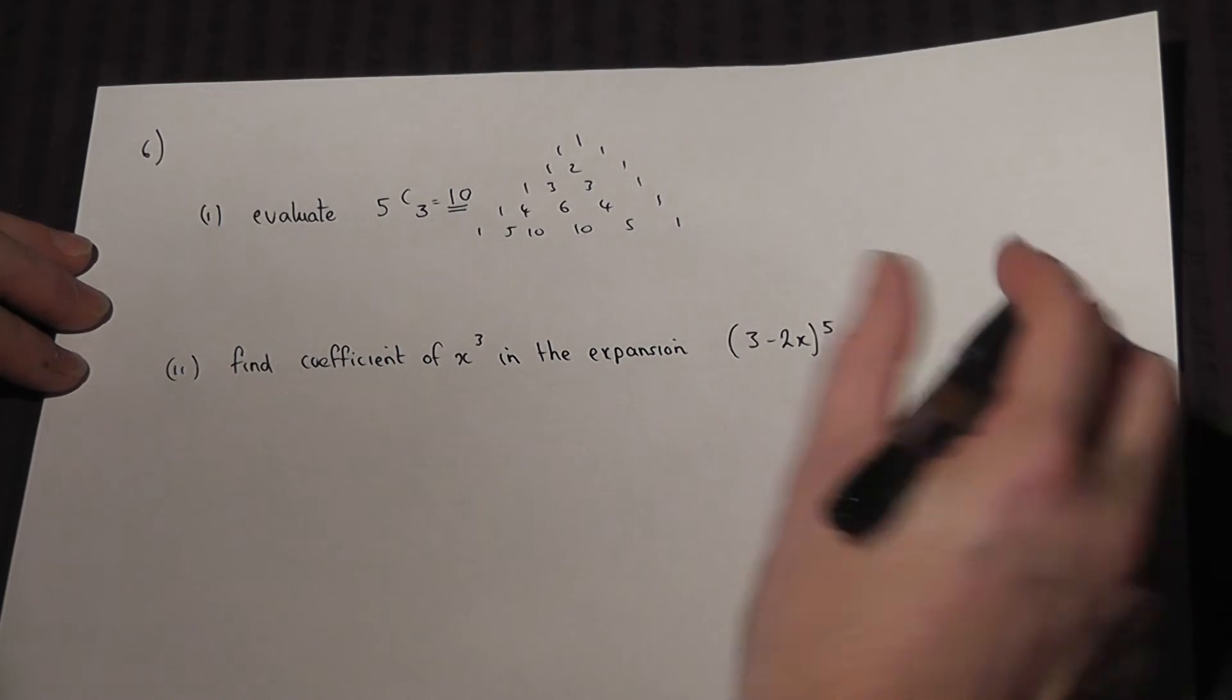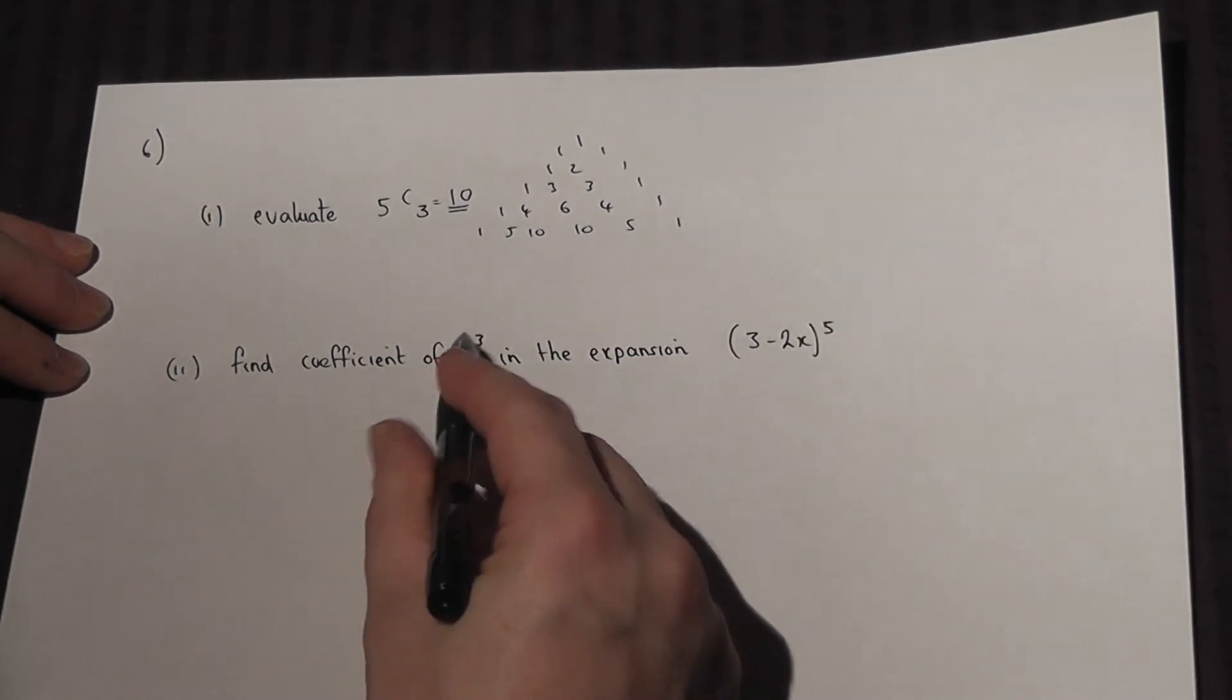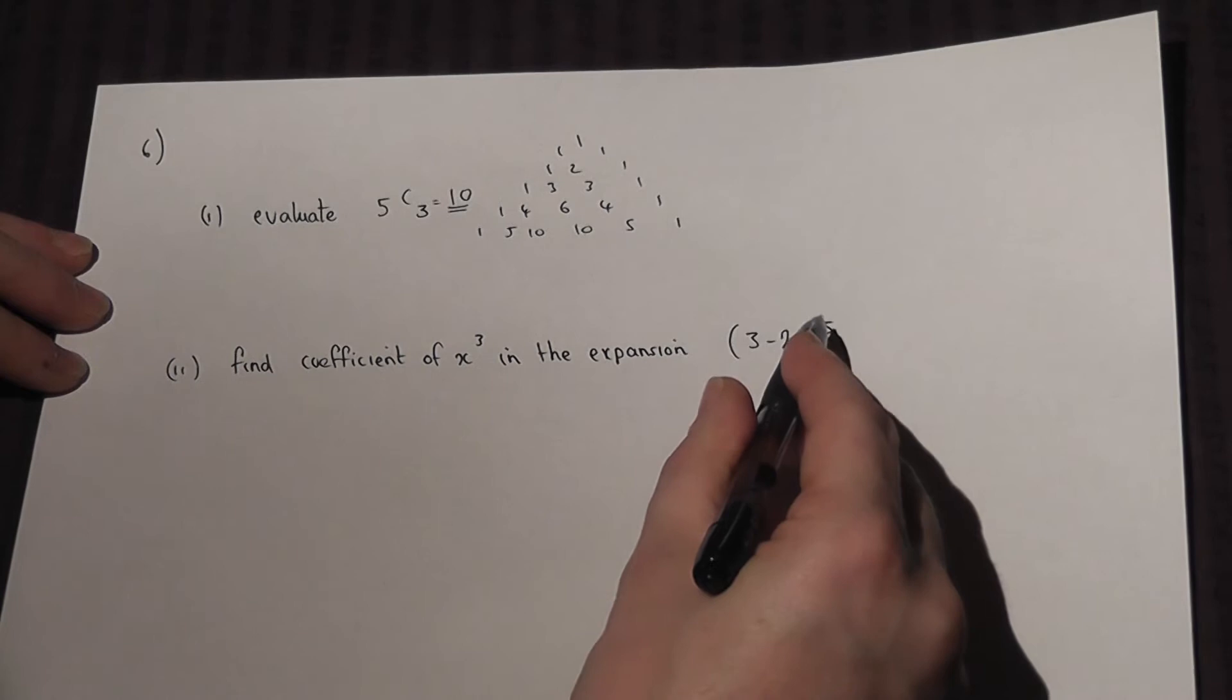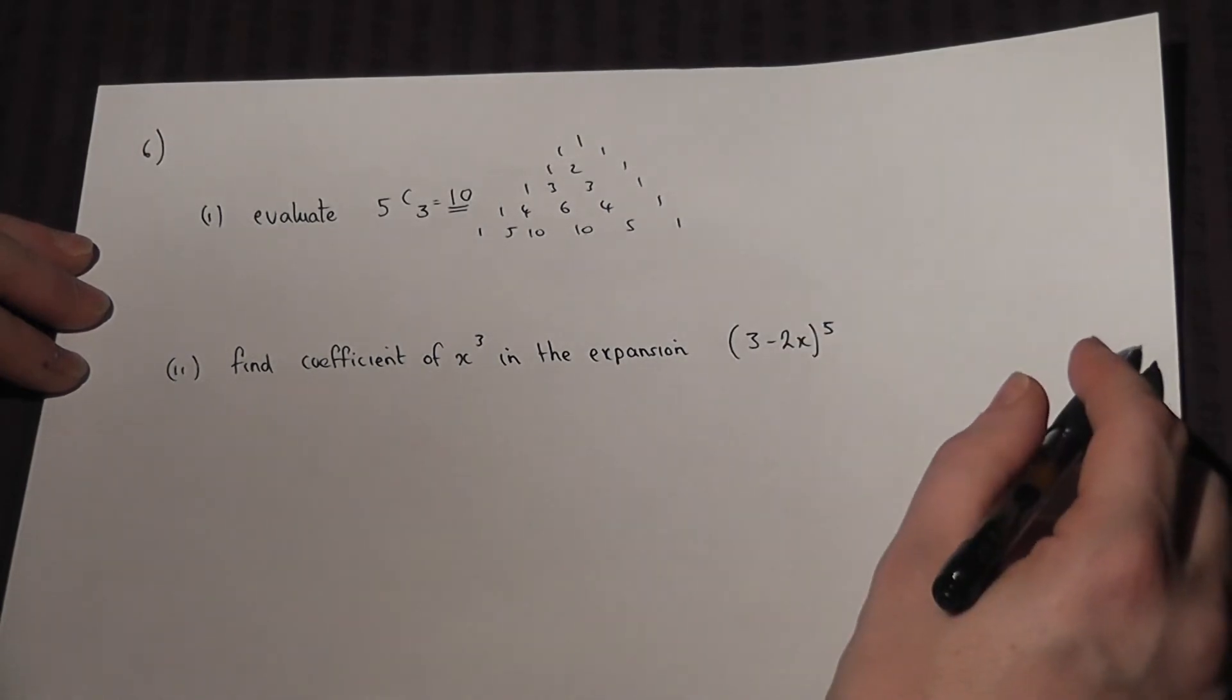If we're then asked to find the coefficient of x³ in the expansion of (3 - 2x) to the power of 5, we do the following step.